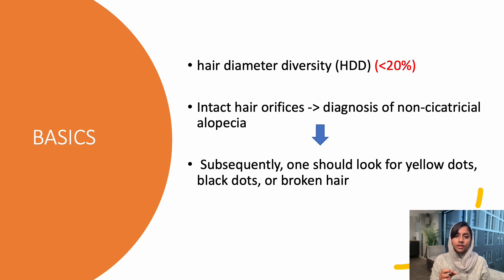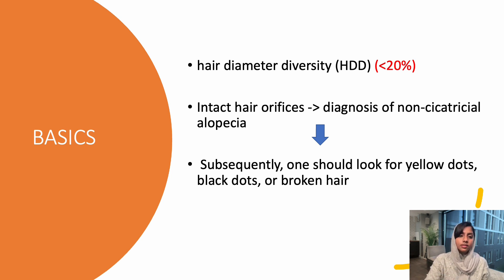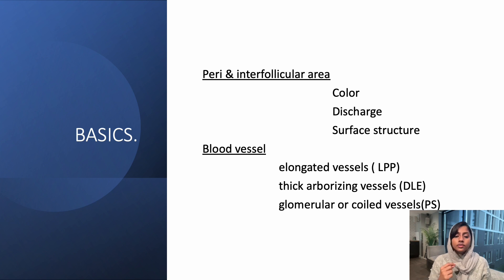While observing, if you see intact hair orifices it indicates non-cicatricial alopecia — but not always, as it can also be seen in early stages of cicatricial alopecia. Once that is identified, you can further look for yellow dots, black dots, or broken hairs. You also need to check the peri- and interfollicular area for color, discharge, or surface structures.